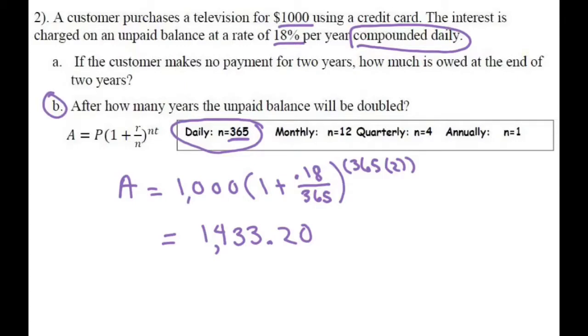When you do part B, it says after how many years will the unpaid balance be doubled? So basically we're going to double the $1,000.